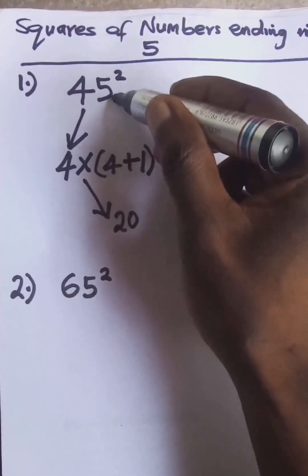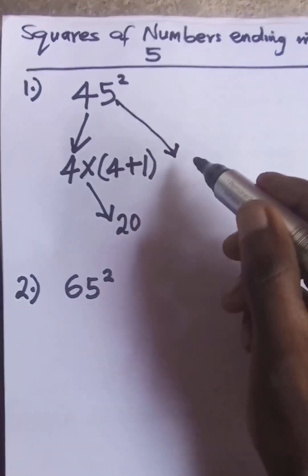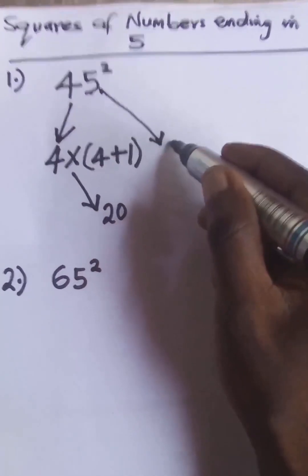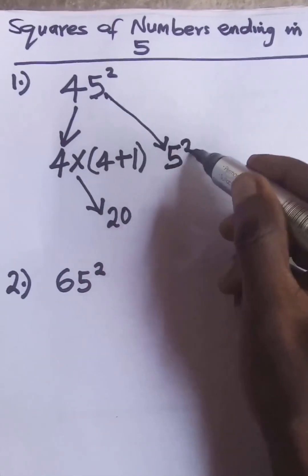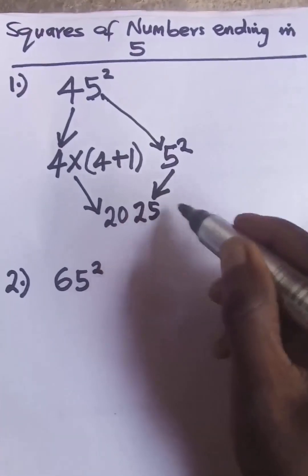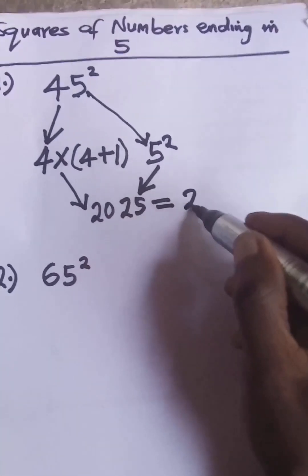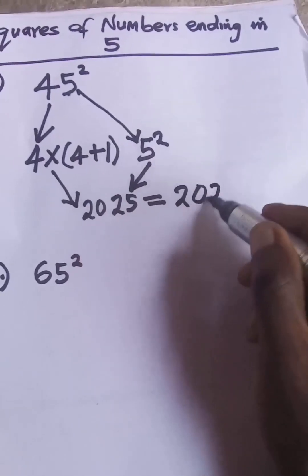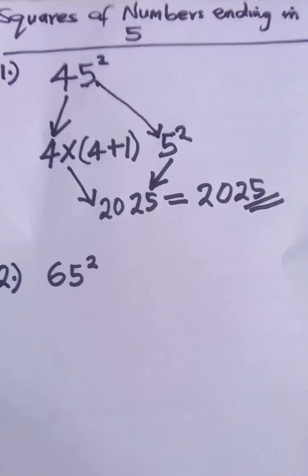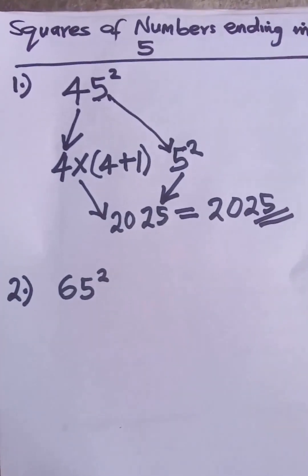The second part: square the unit digit, which is 5. Five squared is 25. So the answer to 45 squared becomes 2025.